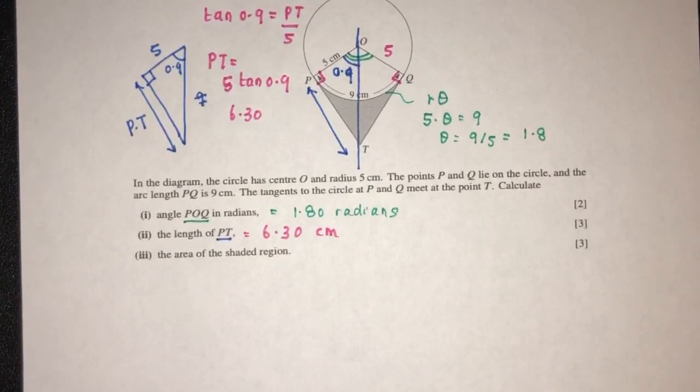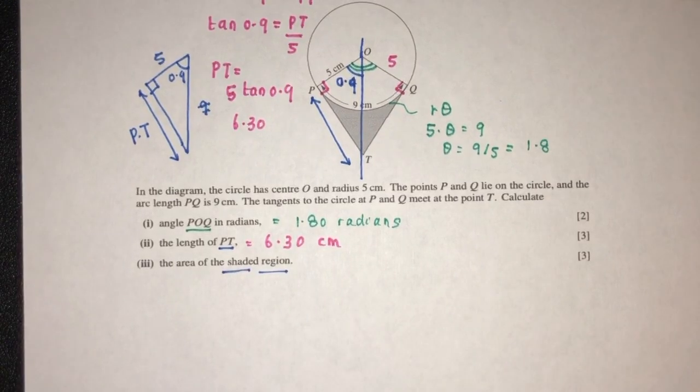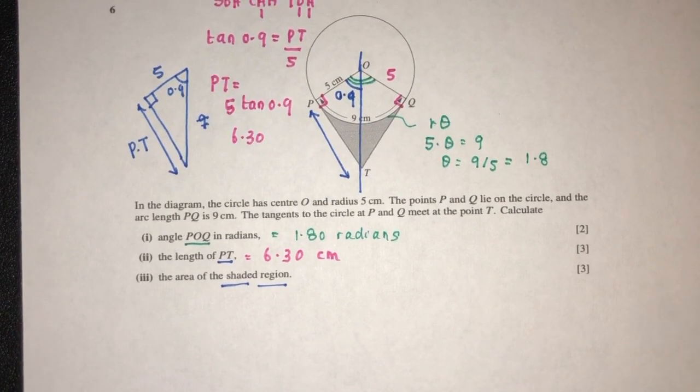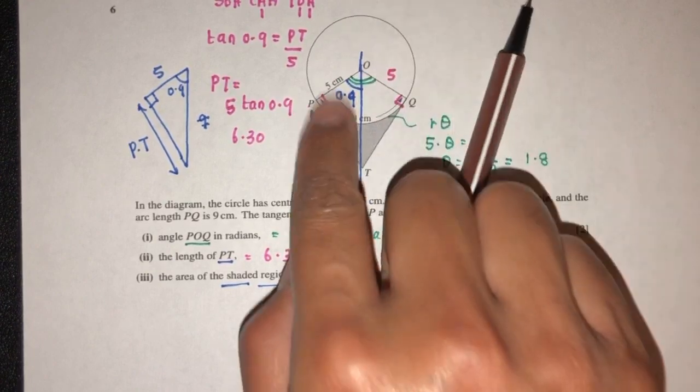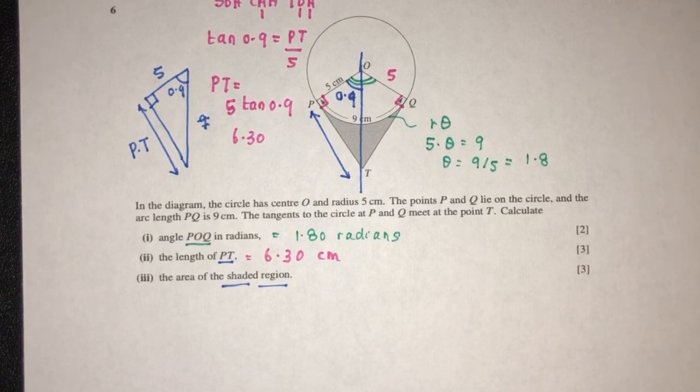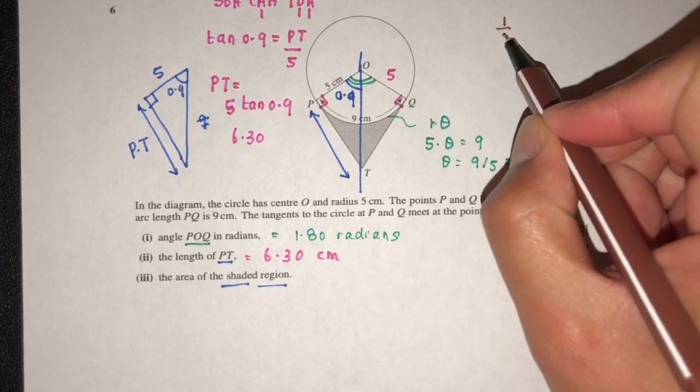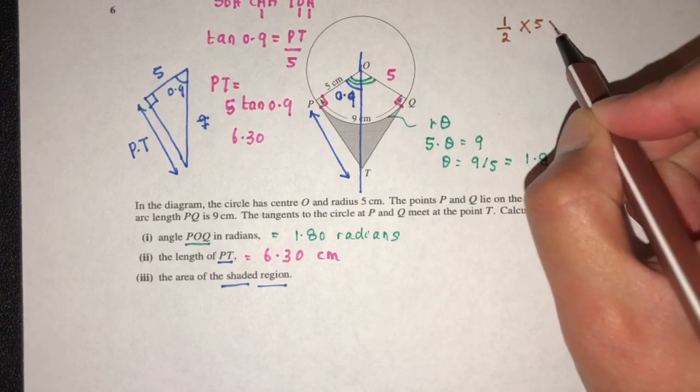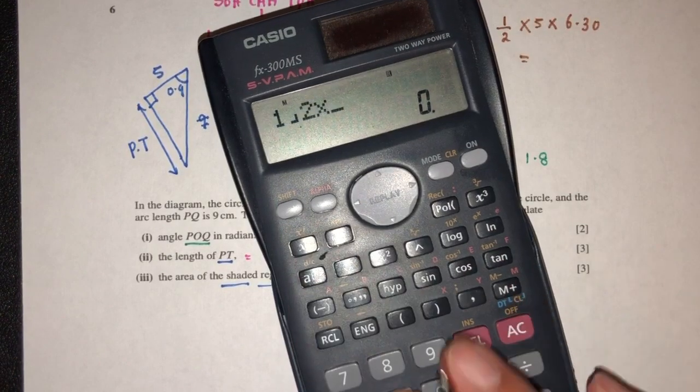Now we have to find the area of the shaded region. We can find the area of half first, since both halves are the same. Find the area of the triangle first: half times base 5 times height 6.3. That equals 15.75.